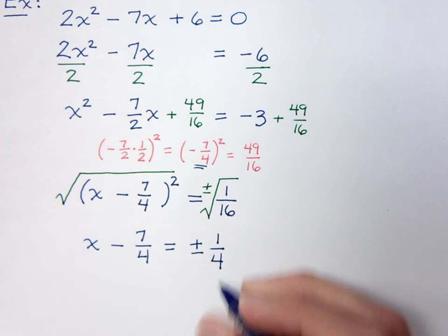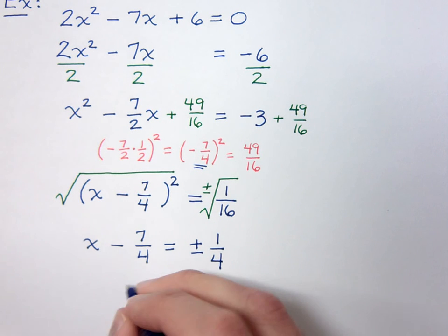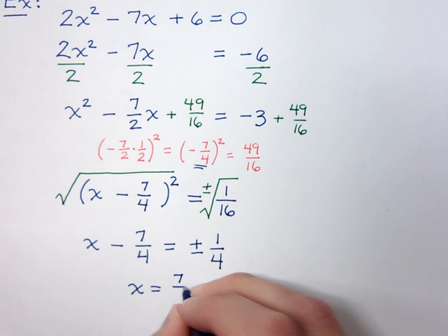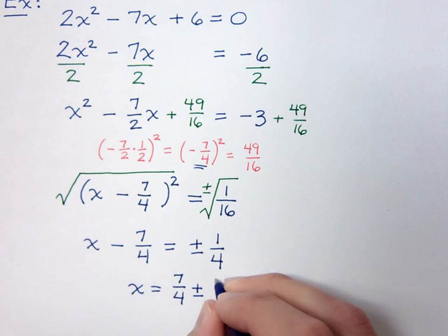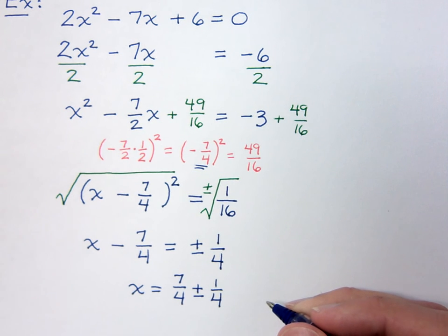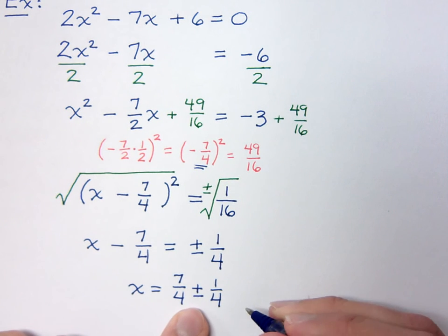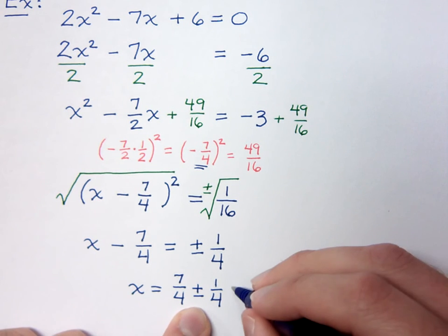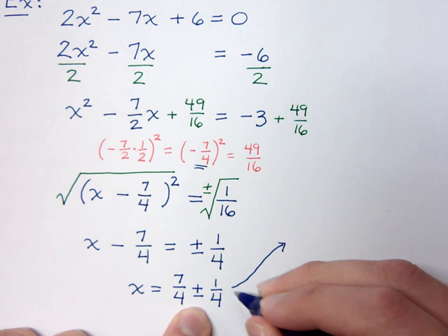And then we want to move the 7 fourths to the other side. So, when we do that, we have x equals a positive 7 fourths plus or minus 1 fourth. Now, as we've talked about these guys before, when you go through and you complete the square, the square root property, you have this plus or minus and there's no i and there are no radicals, you need to separate this to get your two solutions. Because there are no i's and no radicals to get in your way.